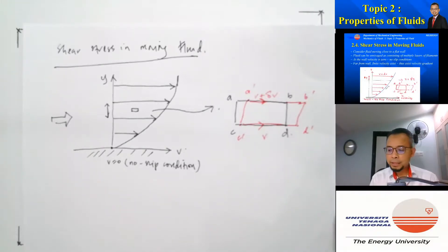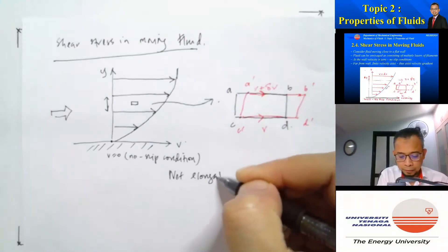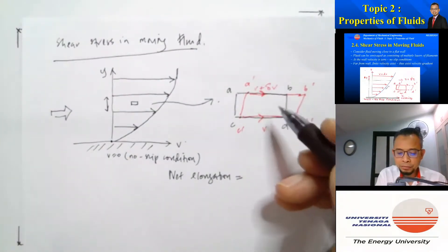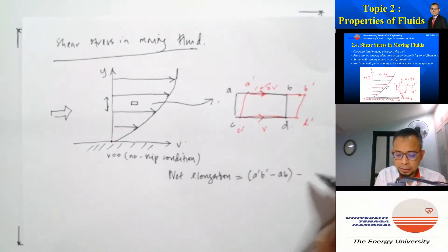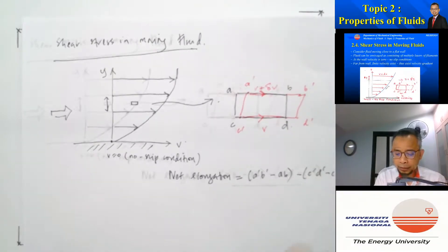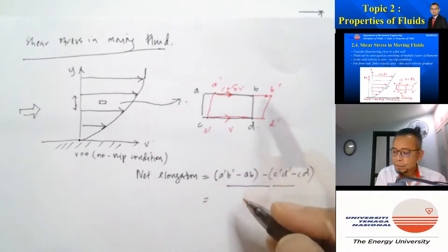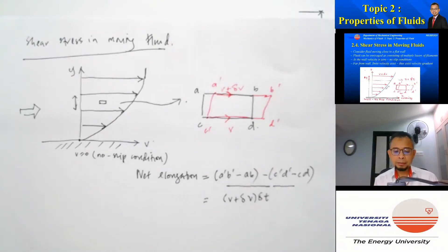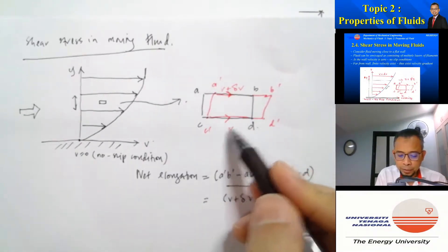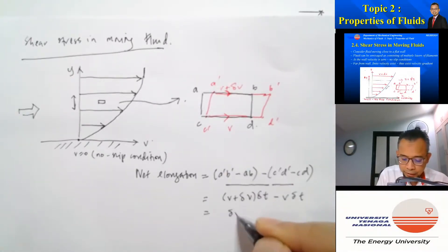I would like to get the expression for shear strain rate. Let's consider the net elongations. Net elongations will be (A dash B dash minus AB) minus (C dash D dash minus CD). This equals (V plus delta V) times delta T minus V times delta T, which is actually equal to delta V times delta T.